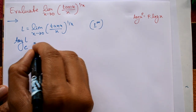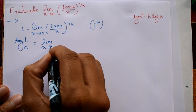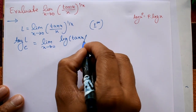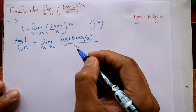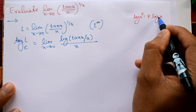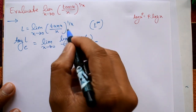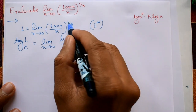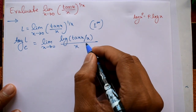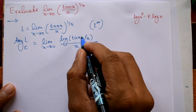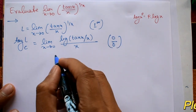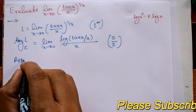Taking log on both sides: log L (base e) equals limit x tends to 0 of log(tan x / x) divided by x. Using the property log(x^p) = p·log(x), this becomes (1/x) times log(tan x / x). Checking the form: this part gives log(1) = 0 in the numerator and 0 in the denominator, so it is a 0/0 form — apply L'Hôpital's rule.